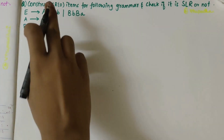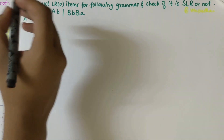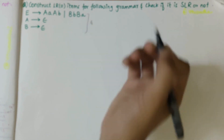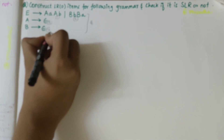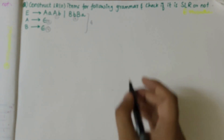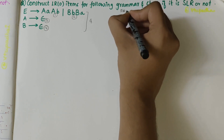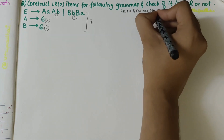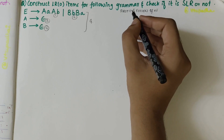In this video we'll be constructing the LR0 items for the given grammar and check if it is SLR grammar or not. Let's consider these productions as grammar G: E → aAb as production 1, production 2, production 3, and production 4 respectively. Before moving on to the construction of LR0 items, we should find the first and follow of the non-terminals present in the grammar.